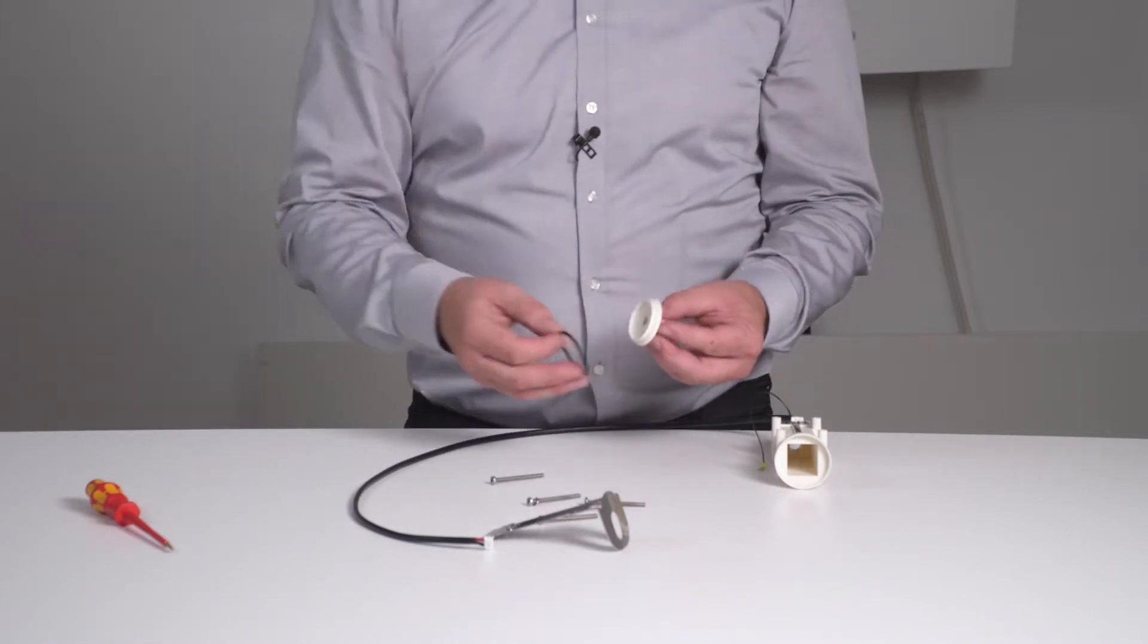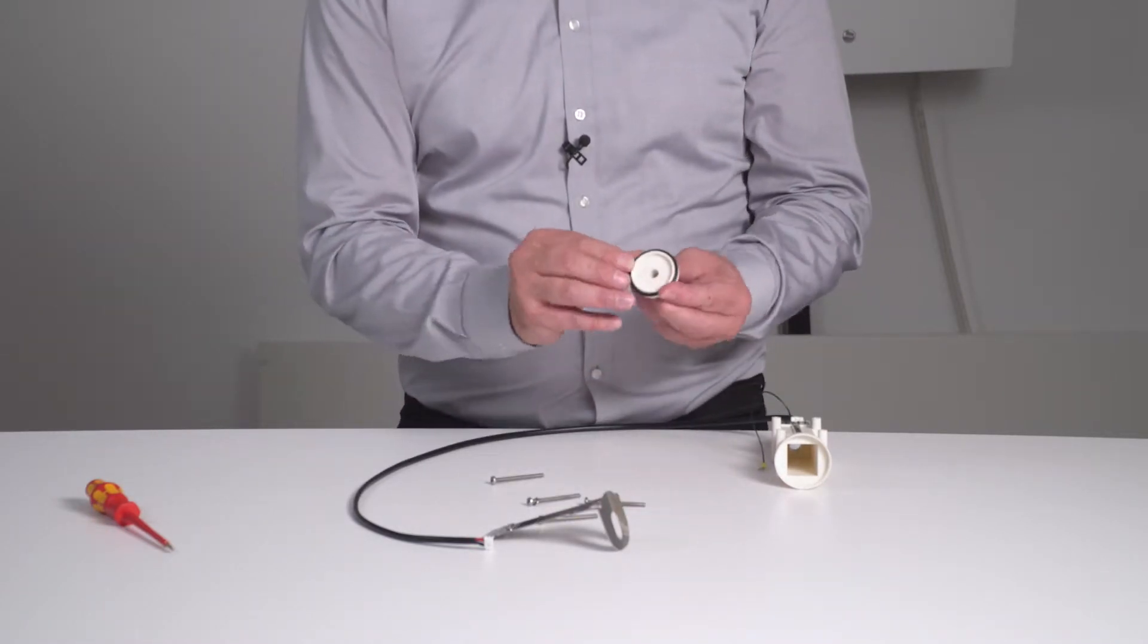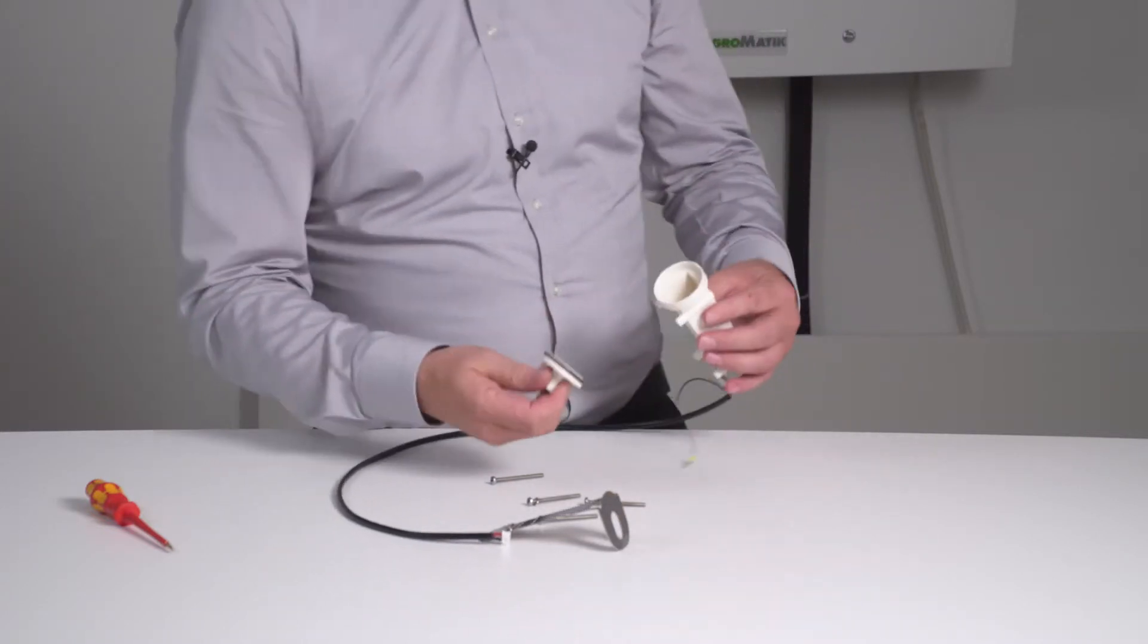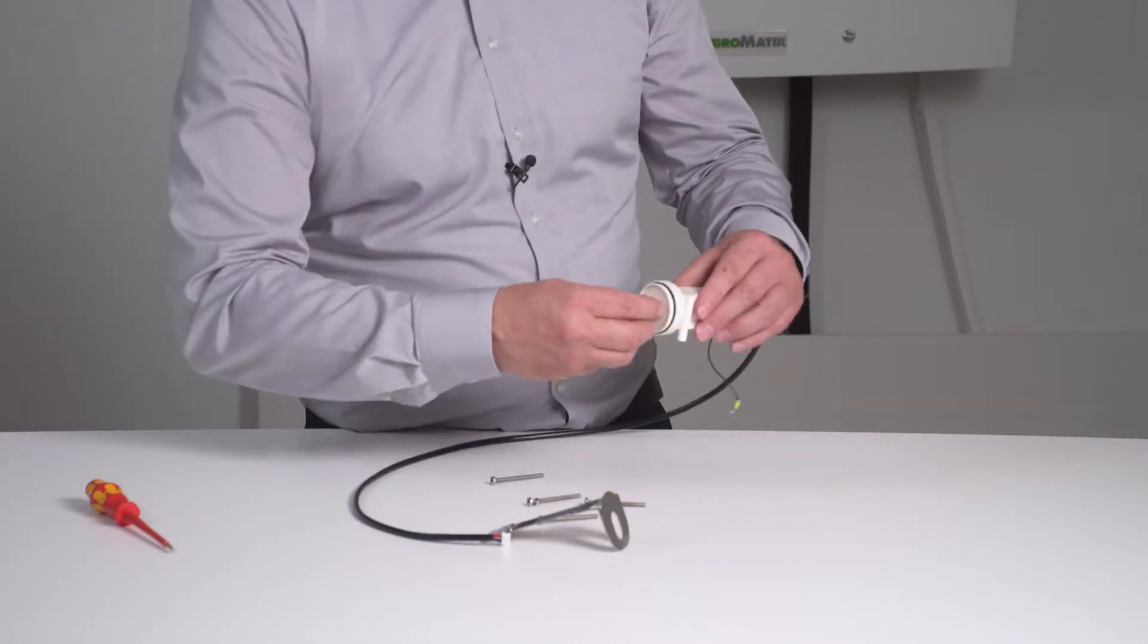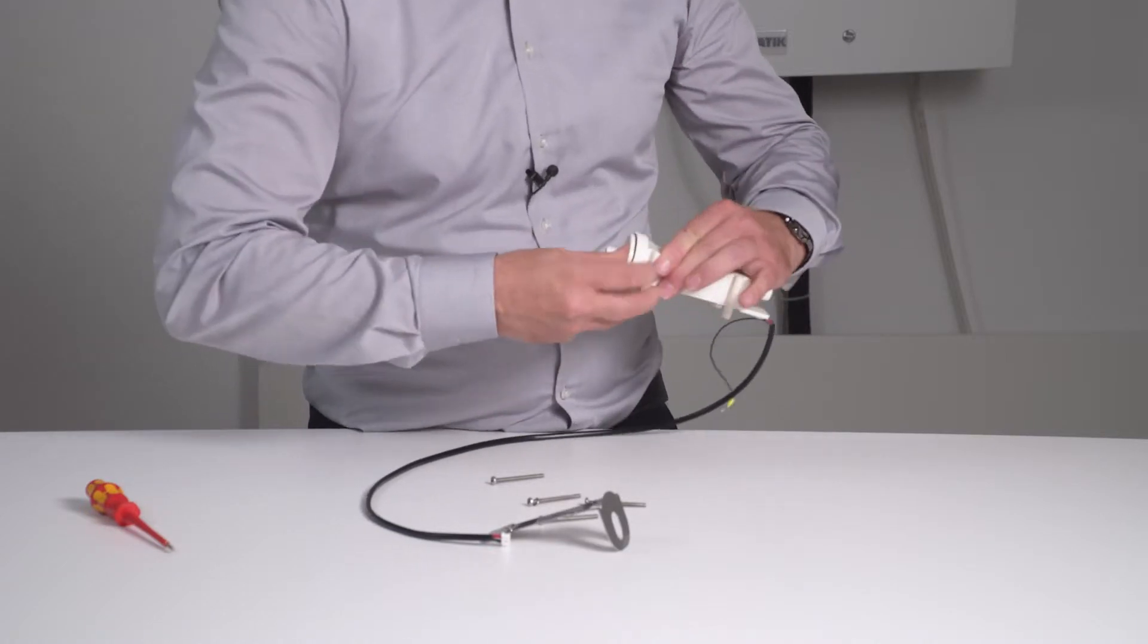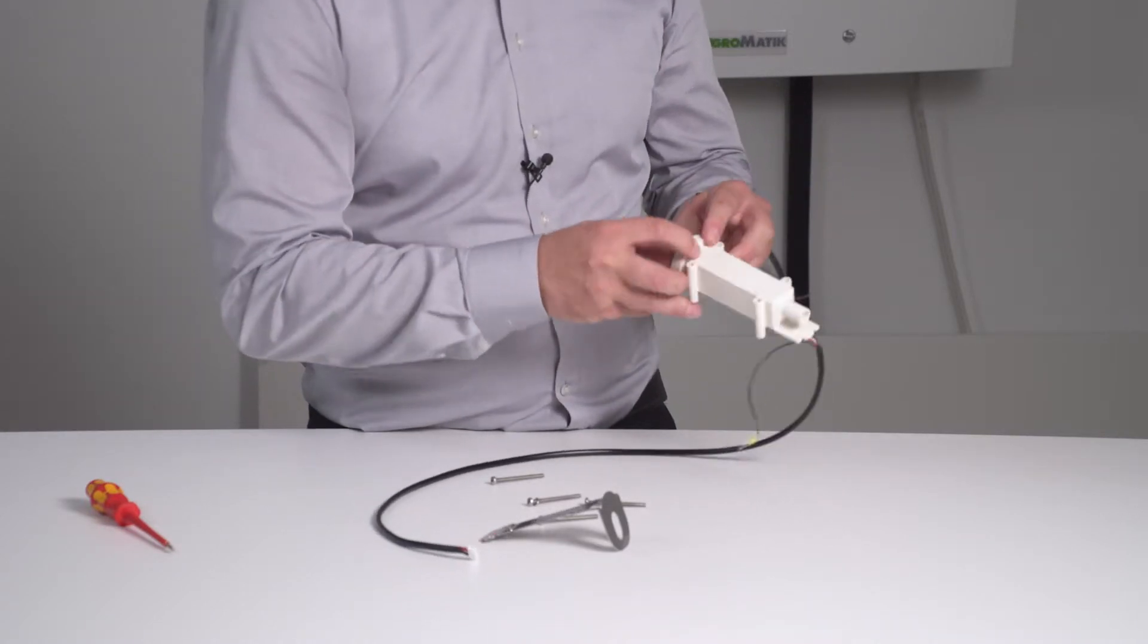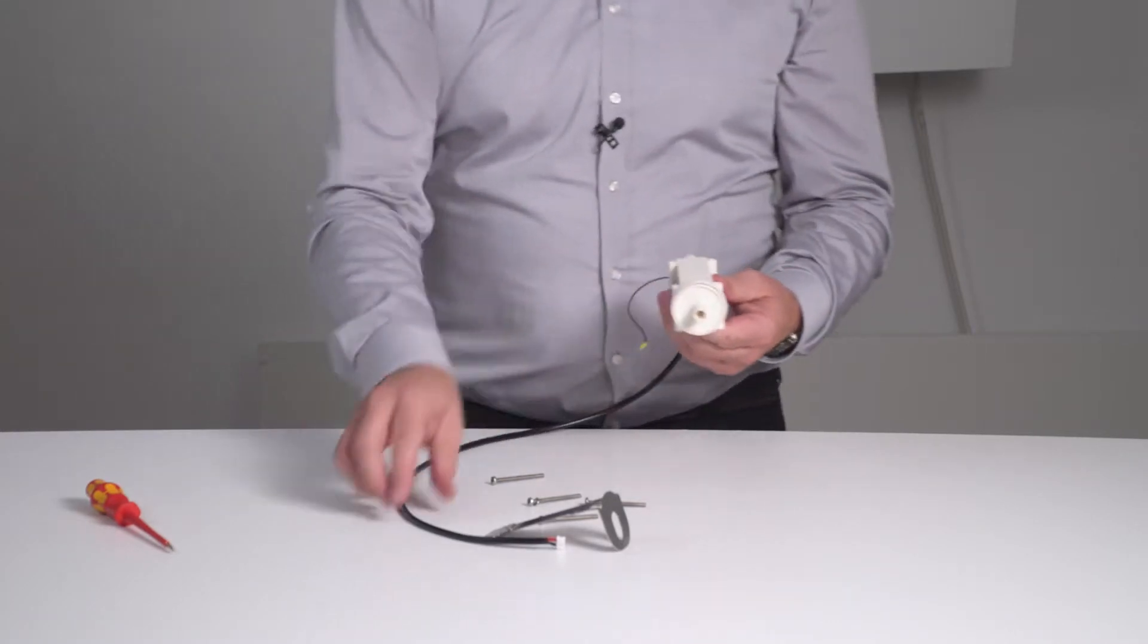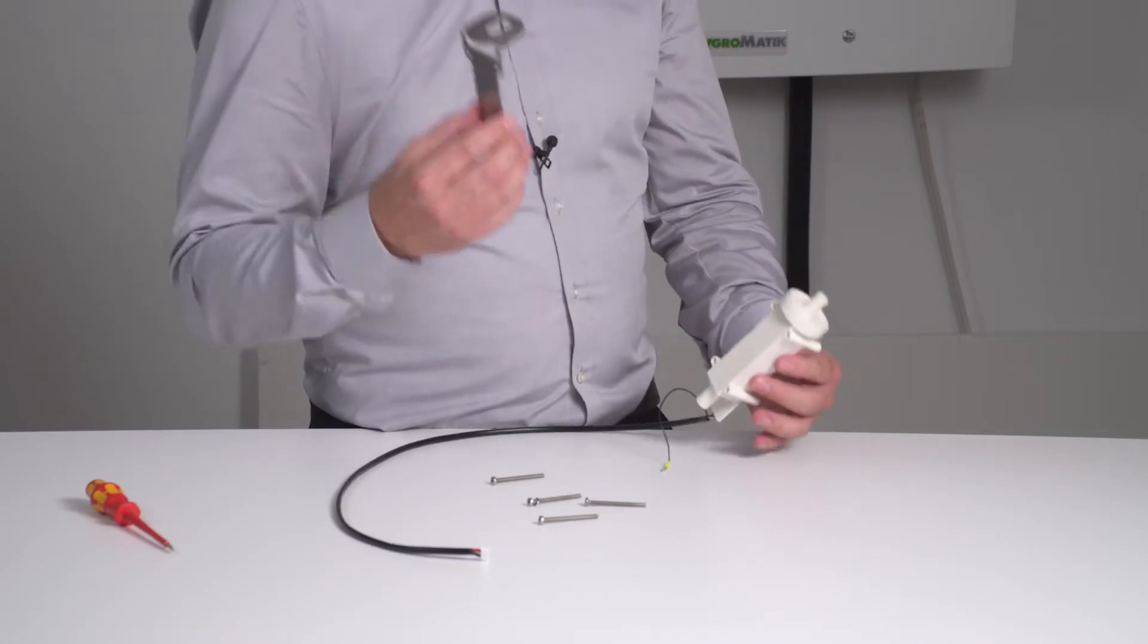Then take a new o-ring and please put it on the lid here. Close the container again and then please make sure to put the shielding plate back on again.